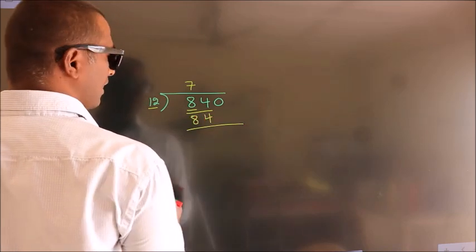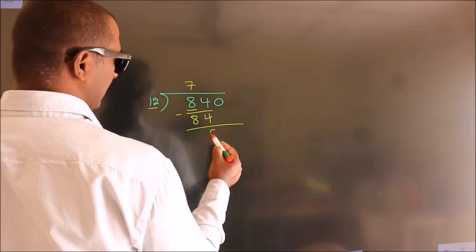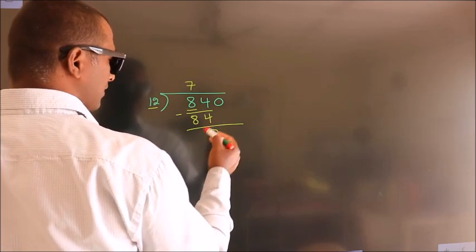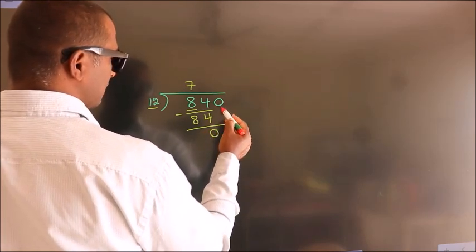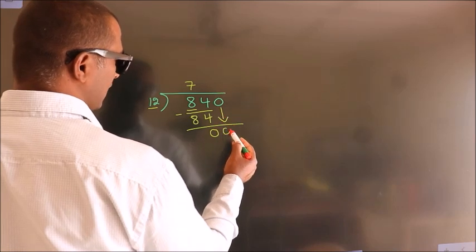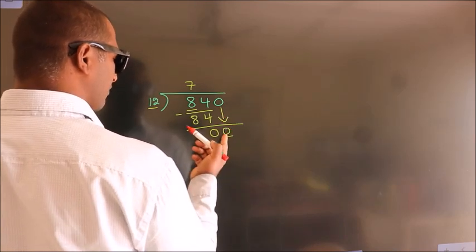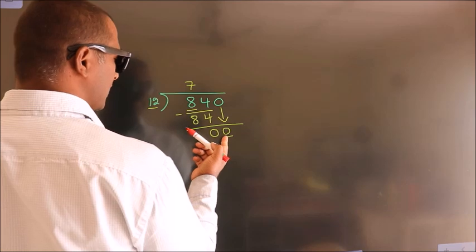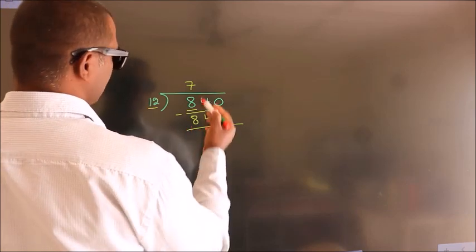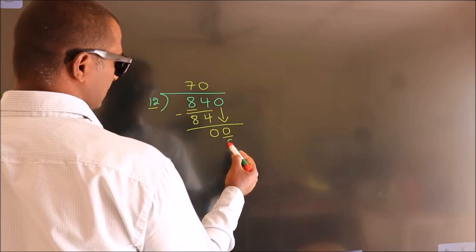Now we should subtract. We get 0. After this, bring down the beside number — so 0 comes down, giving us 0. When do we get 0 in the 12 table? 12 times 0 is 0.